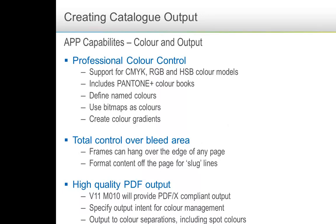CMYK, RGB and HSB color models are supported. Pantone is an industry-wide color definition system - they produce books of color grouped according to different types of paper or different types of colors. APP supports the Pantone Plus color books, so you can choose your color from there and put it as a named color in your PDF output so that the printer will know that's a specific color and will use the specific Pantone ink when creating the printed output. You can also define named colors, which have a specific use when you want color separated output - you can have your named colors on a separate plate.